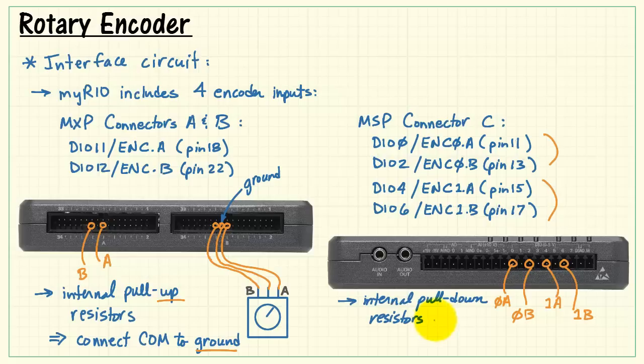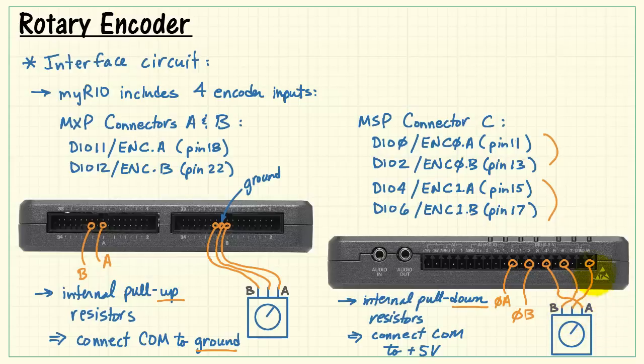The MSP connector uses internal pull-down resistors, and that means that we need to connect the COM to plus 5 volts. You could use plus 3.3 volts from the MXP connector if you want, but it's probably more convenient to just use the power supply on the MSP side.